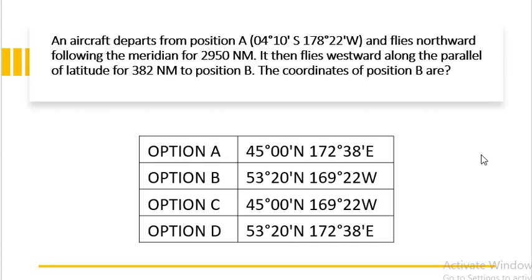An aircraft departs from position A, 4 degrees 10 minutes south, 178 degrees 22 minutes west, and flies northward following the meridian for 2950 nautical miles. It then flies westward along the parallel of latitude for 382 nautical miles to position B. The coordinates of position B are what we have to find out. The options given are: